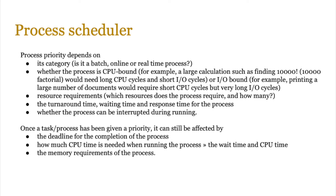The combination of factors and their weighting depends on the algorithm and whoever is coding the operating system — once coded, the process scheduler simply follows those instructions. Once a task has been given a priority it can still be affected by the deadline for completion, how much CPU time is needed, and the memory requirements of the process — for example, a process could be given high priority but there's not enough memory available to run it.